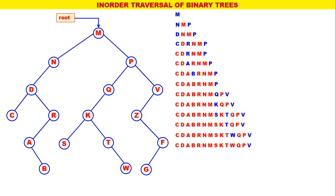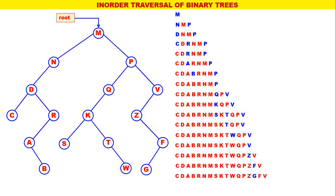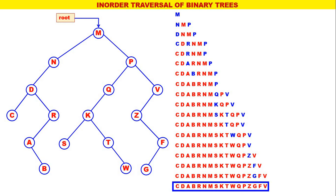Next, V. The inorder for V is Z, V with V processed. Next, the leftmost is Z. The inorder for Z is Z, F with Z processed. Next, leftmost is F — the inorder for F is G, F with F processed. Next, G — the inorder for G is G only with G processed. Now all nodes are traversed. The inorder traversal of this binary tree is C, D, A, B, R, N, M, S, K, T, W, Q, P, Z, G, F, V. In inorder, the root always comes in between, so for any given complicated tree you should be able to easily find the inorder traversal.